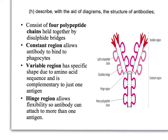This slide deals with the structure of antibodies. It consists of four polypeptide chains held together by disulfide bridges — covalent bonds between cysteine amino acids, which are amino acids with an R group containing a sulfur atom.